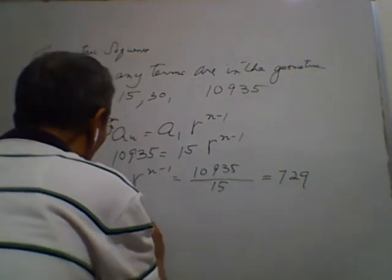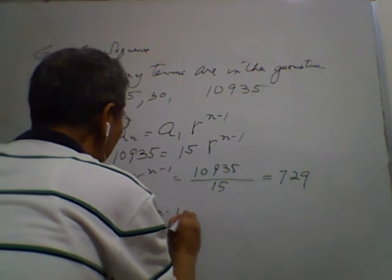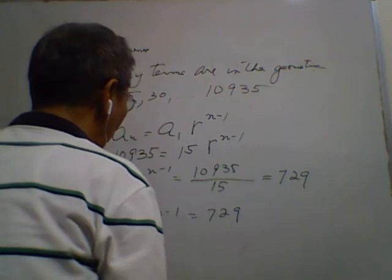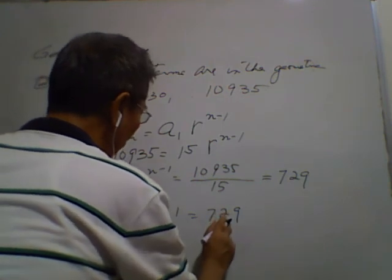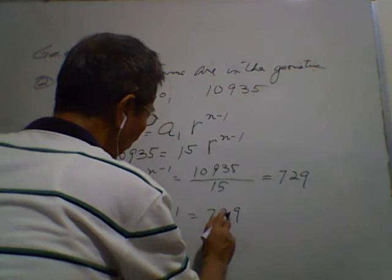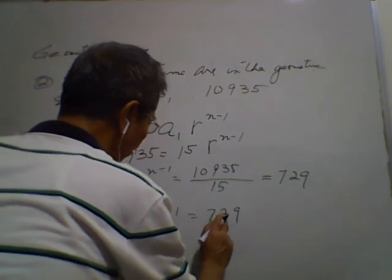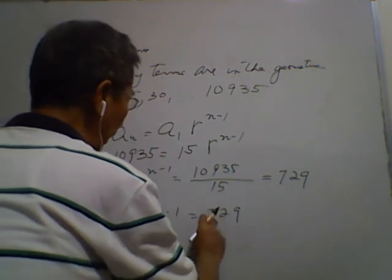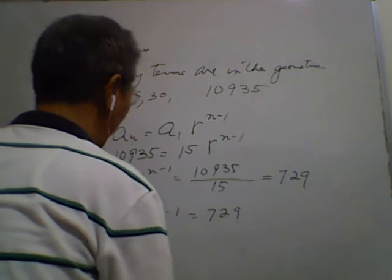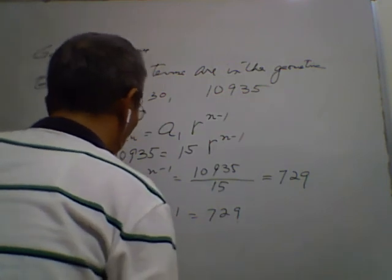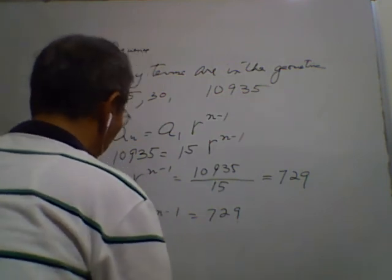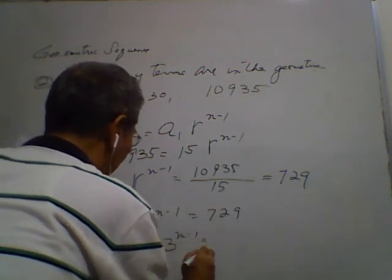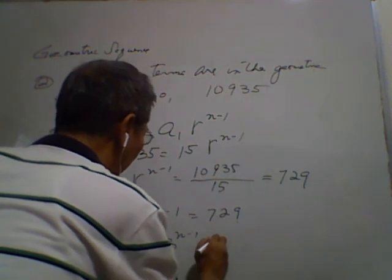So, r to the power of n minus 1 is 729. And in solving how many terms, this number is exactly divisible by 3. Since the sum of these 3 digits here is divisible by 3, that's 18. So, 18 is divisible by 3, so we have here 3 raised to n minus 1 is equal to 729.